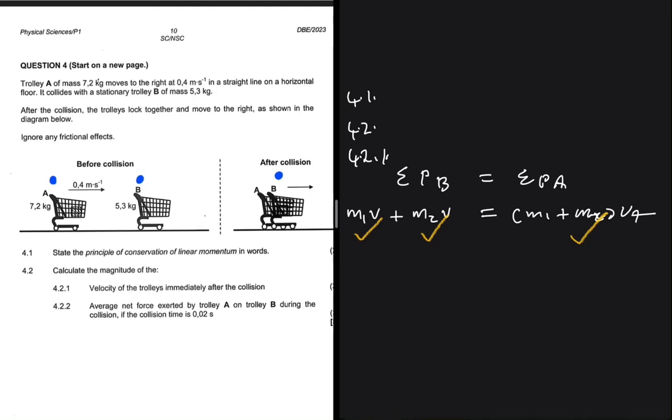If we go ahead and substitute, we're going to get 7.2 multiplied by 0.4. We take direction to the right as positive. Plus the mass of trolley B, which is 5.3 multiplied by 0, because it was stationary. And then this will be equals to 7.2 plus 5.3 multiplied by the final velocity.